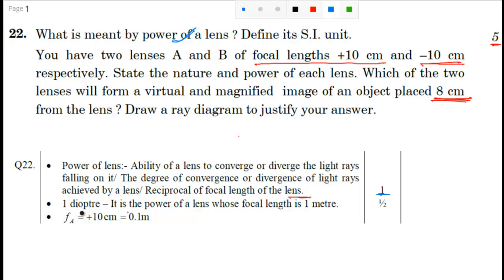Define its SI unit. So you know the SI unit of power of a lens is diopter. And one diopter is basically what? It is the power of a lens whose focal length is one meter. For that you will get half marks.